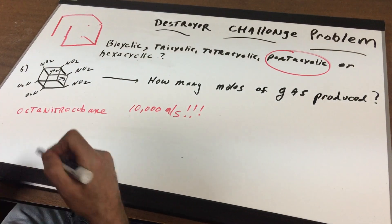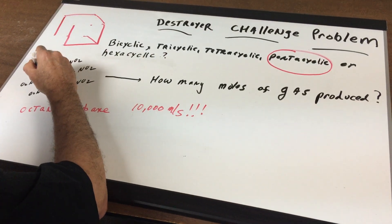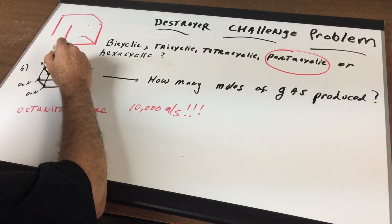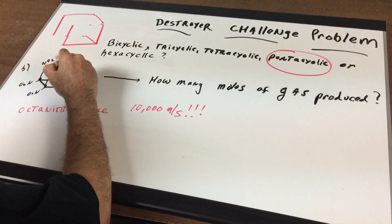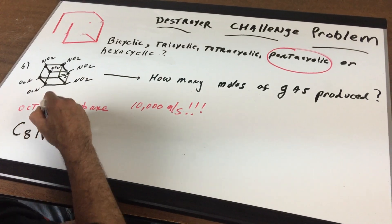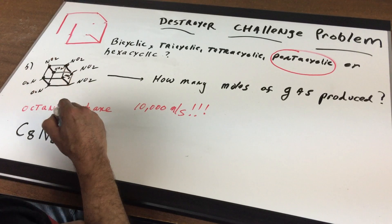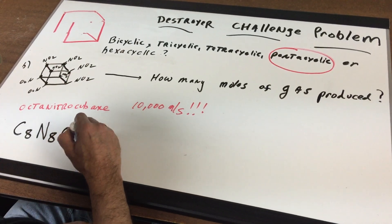Well, what's the gimmick? The gimmick is if you counted all the carbons, one, two, three, four, five, six, and seven, and eight, and that gave me a C8. There are eight nitrogens and there are oxygens that are 16.